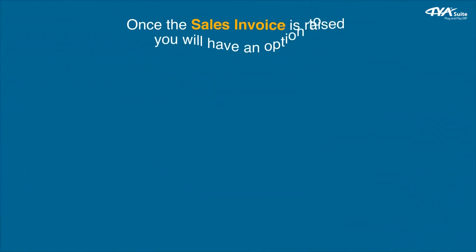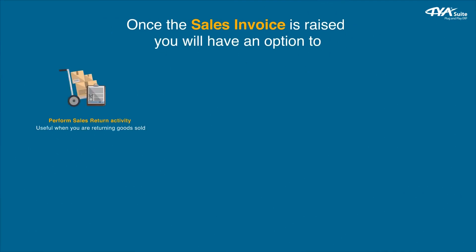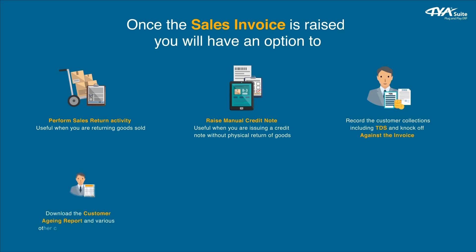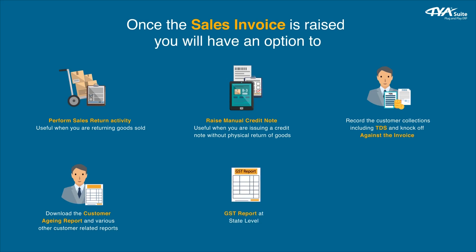Once the sales invoice is raised, you will have an option to perform a sales return activity — useful when returning goods sold — or raise a manual credit note, useful when issuing a credit note without physical return of goods. You can record customer collections including TDS and knock off against the invoice. You can also download the customer aging report, various other customer-related reports, a GST report at state level, open sales order report, and many more.